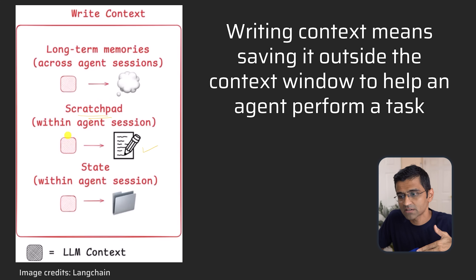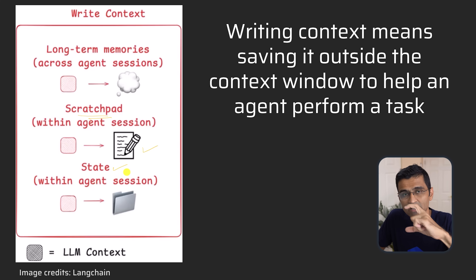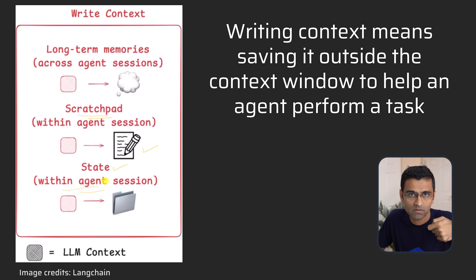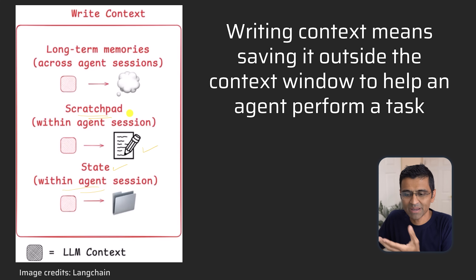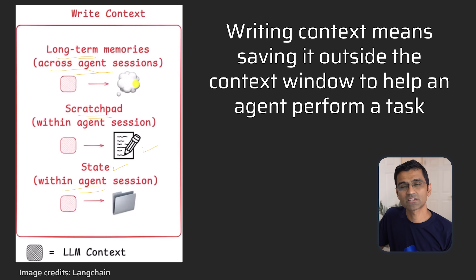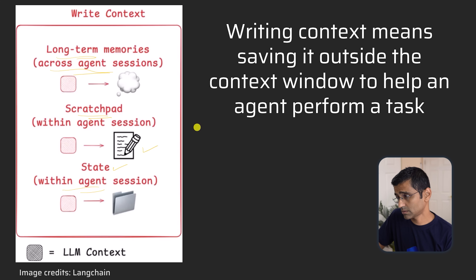This is useful for an agent session. Another technique is using state — if you've worked with LangGraph, there is a state that you pass across all the nodes, and you can use that state to write meaningful information for the context. And for long-term memory across sessions: if you use ChatGPT, it remembers your past conversations. If you say 'define my personality based on past conversations,' it will. That uses long-term memory valid across agent sessions. These are the three techniques for writing context — saving it outside the context window to help an agent perform a task.